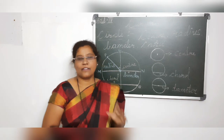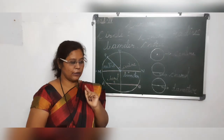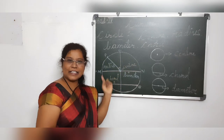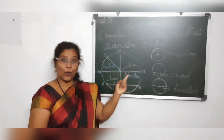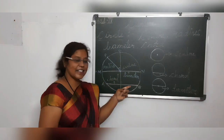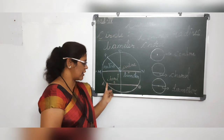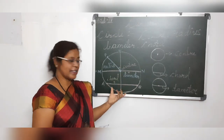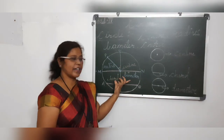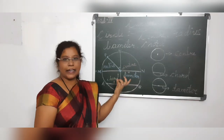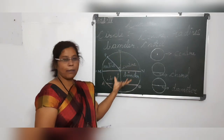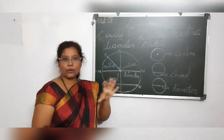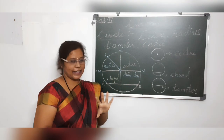First of all I wanted to tell you a secret — a circle is a closed figure. As you can see, I have a circle here and it is a closed figure. It is not having any end, it is not having any open part, and a circle has no sides and edges.